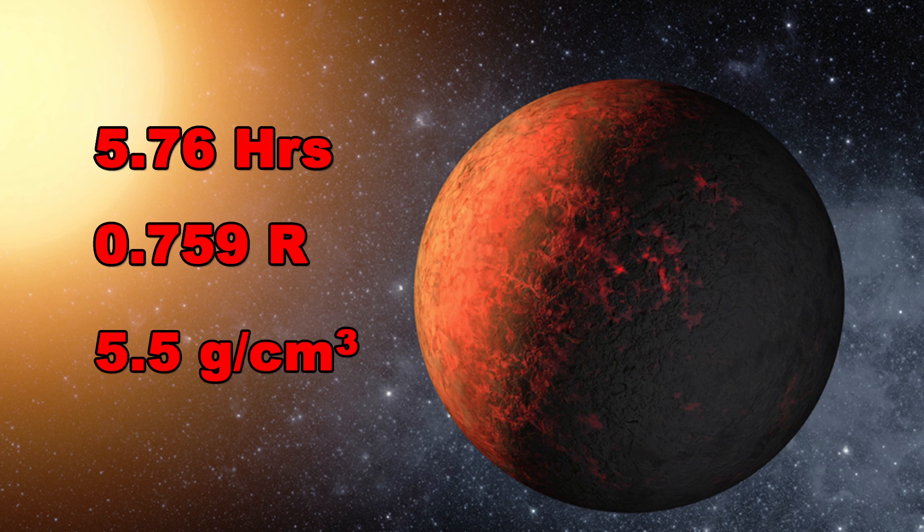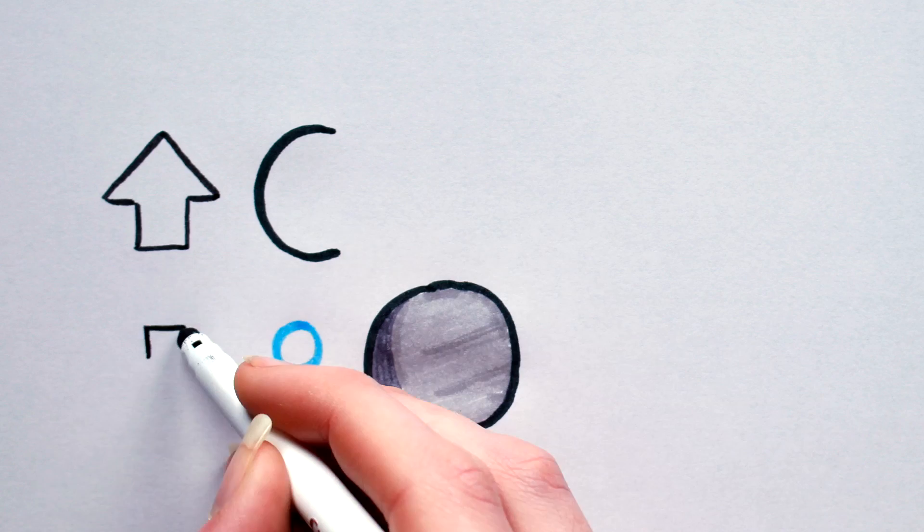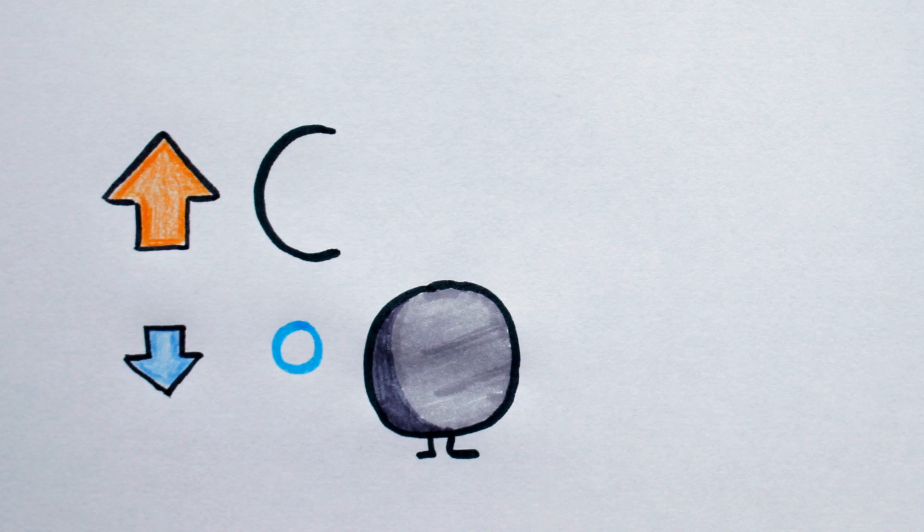Not steel enough for you? Try this, the carbon planet. Carbon planets are planets that contain more carbon than oxygen, and will form if a protoplanetary disk has a high carbon-to-oxygen ratio.